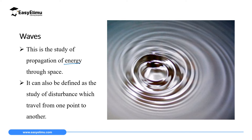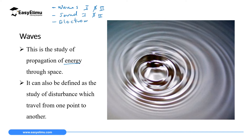We can also define waves as the study of a disturbance traveling from one point to another. Some topics under waves include a topic in form two called Waves One, a topic in form three called Waves Two, a topic in form two called Sound One, a topic in form three called Sound Two, and a topic in form four called Electromagnetic Waves.